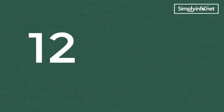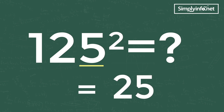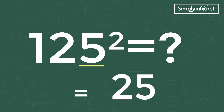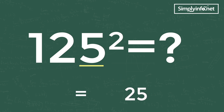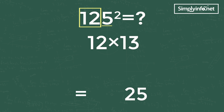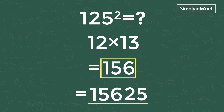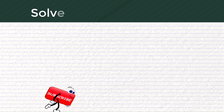Let's take another example: 125 square is how much? Take the ones digit, that is 5, and the square of 5 is 25. Write 25 in the ones digit of the answer as shown here. Take the remaining digits of the problem and multiply with the next number — remaining digit is 12 and its next number is 13. By multiplying 12 and 13 we get 156. Write this number in the answer. The answer is 15625.